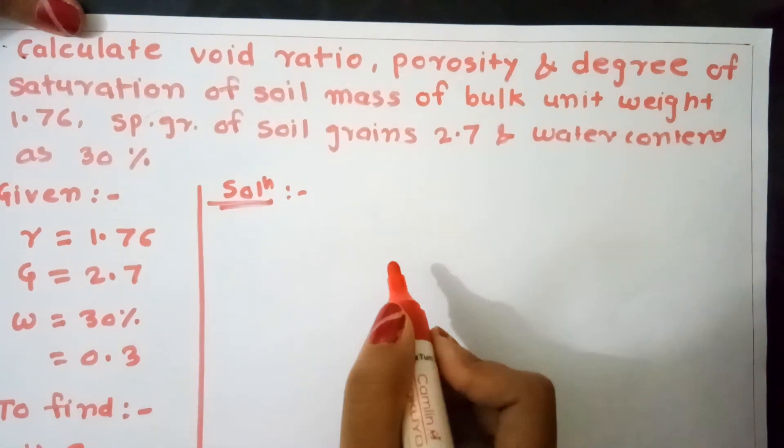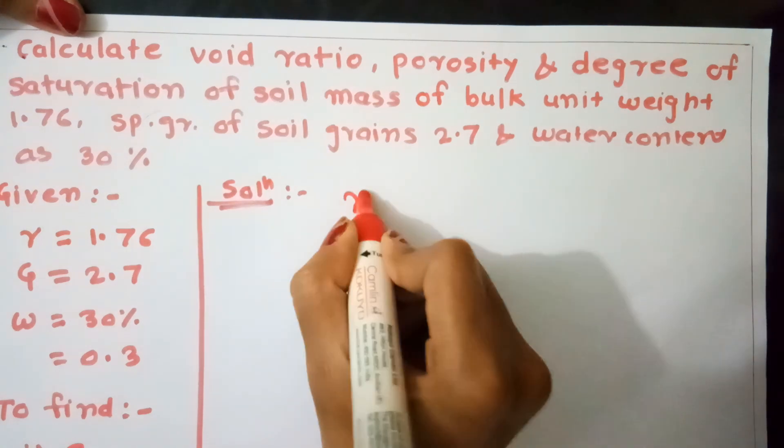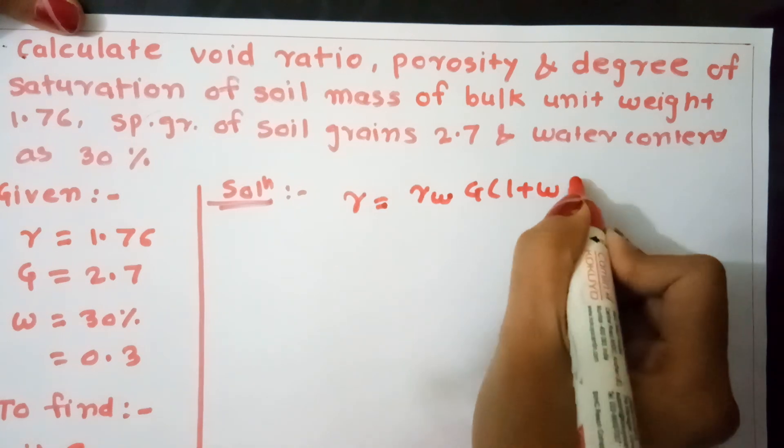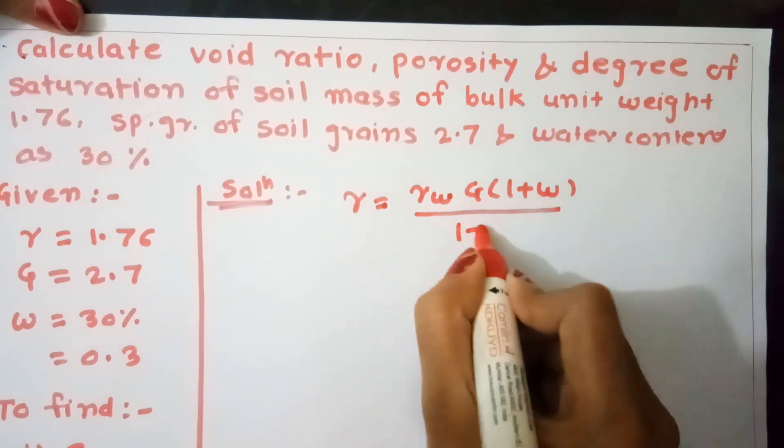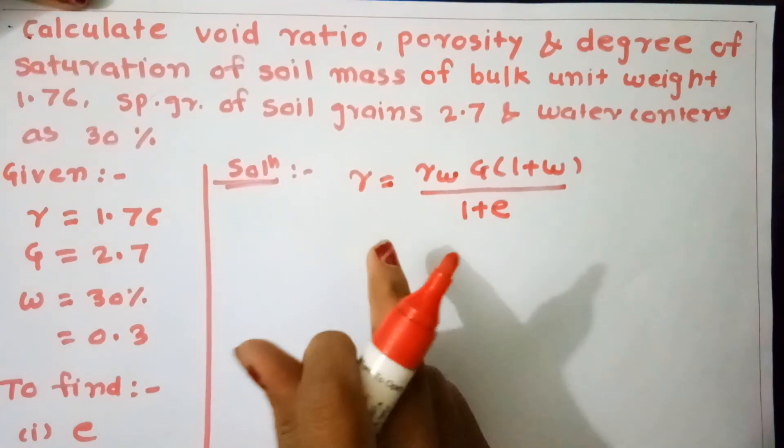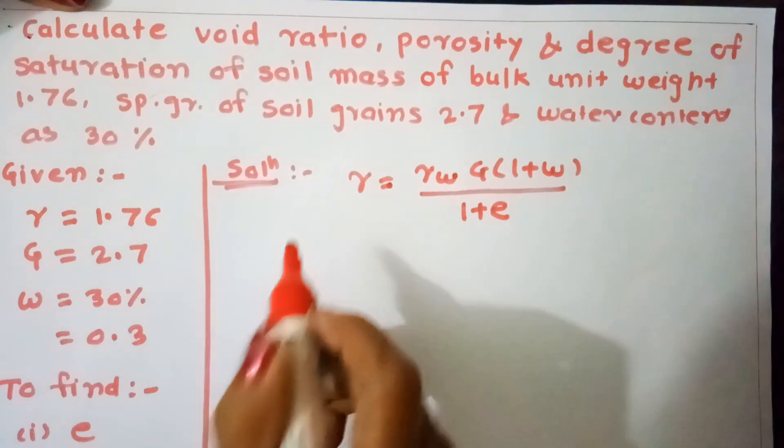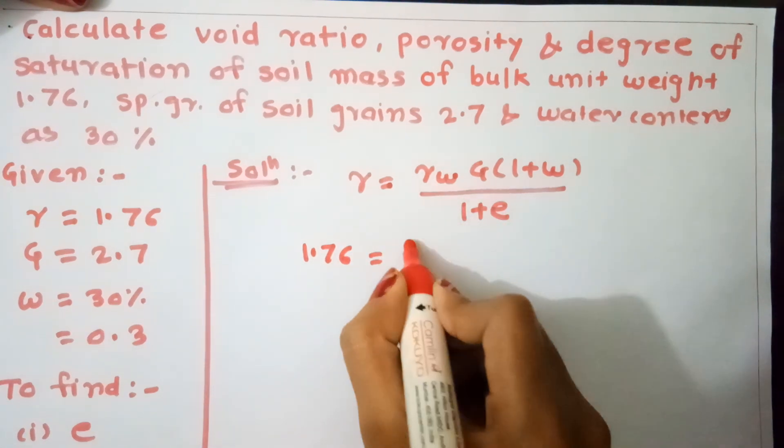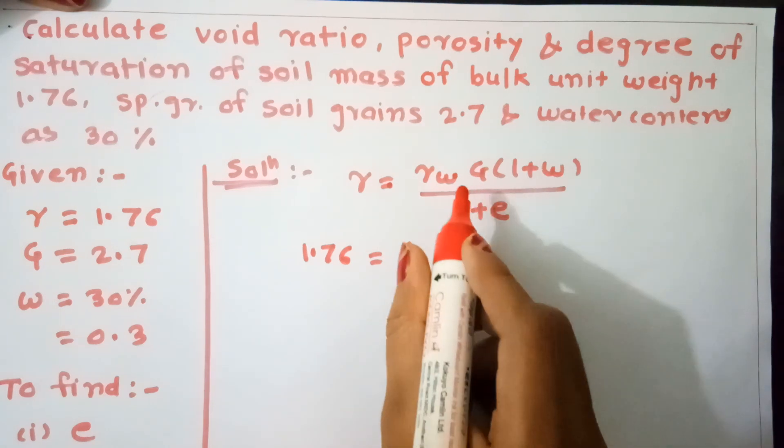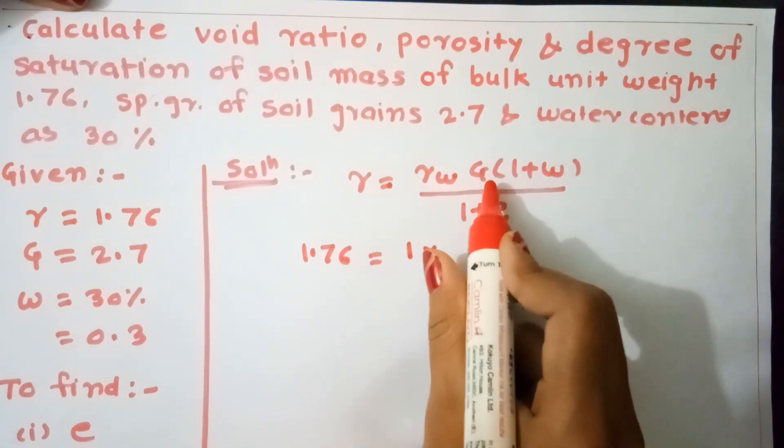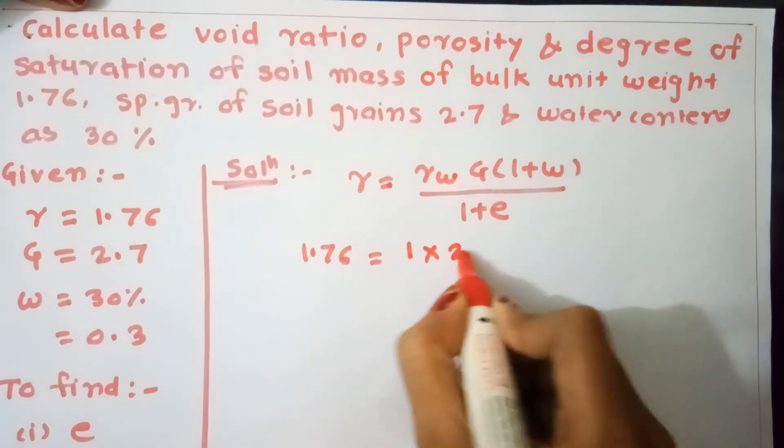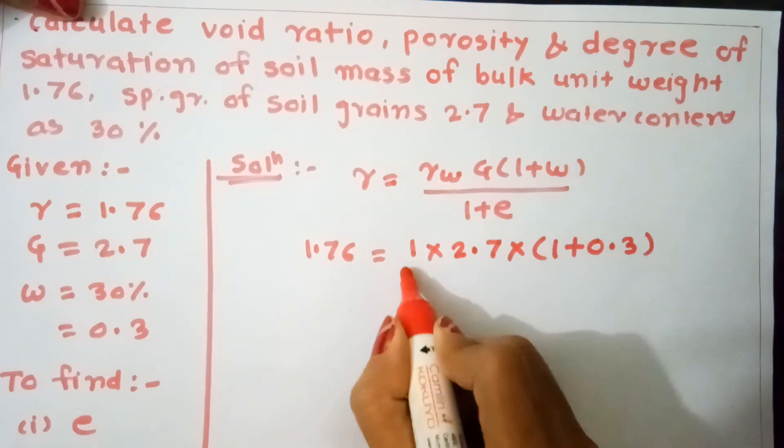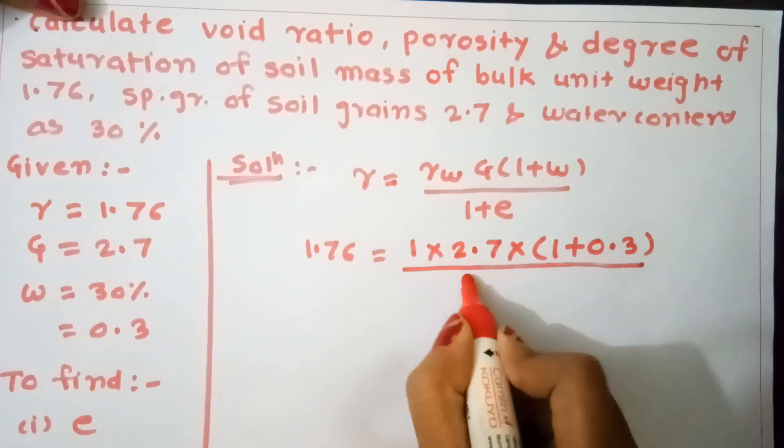Solution: We know that γ = γw·G(1+w)/(1+e). We have γ = 1.76, γw = 1 (unit weight of water is constant), specific gravity G = 2.7, water content = 0.3. Substituting: 1.76 = 1 × 2.7 × (1+0.3)/(1+e), where e is unknown.